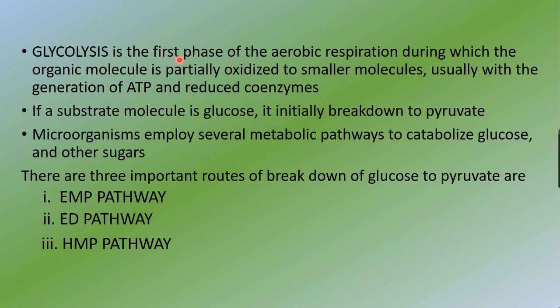Glycolysis is the first phase of aerobic respiration during which an organic molecule is partially oxidized to smaller molecules, usually with the generation of ATP and reduced coenzymes. If the substrate molecule is glucose, it is initially broken down, and microorganisms employ several metabolic pathways to catabolize glucose to get ATP. These three ways include EMP pathway, HMP pathway, and ED pathway.